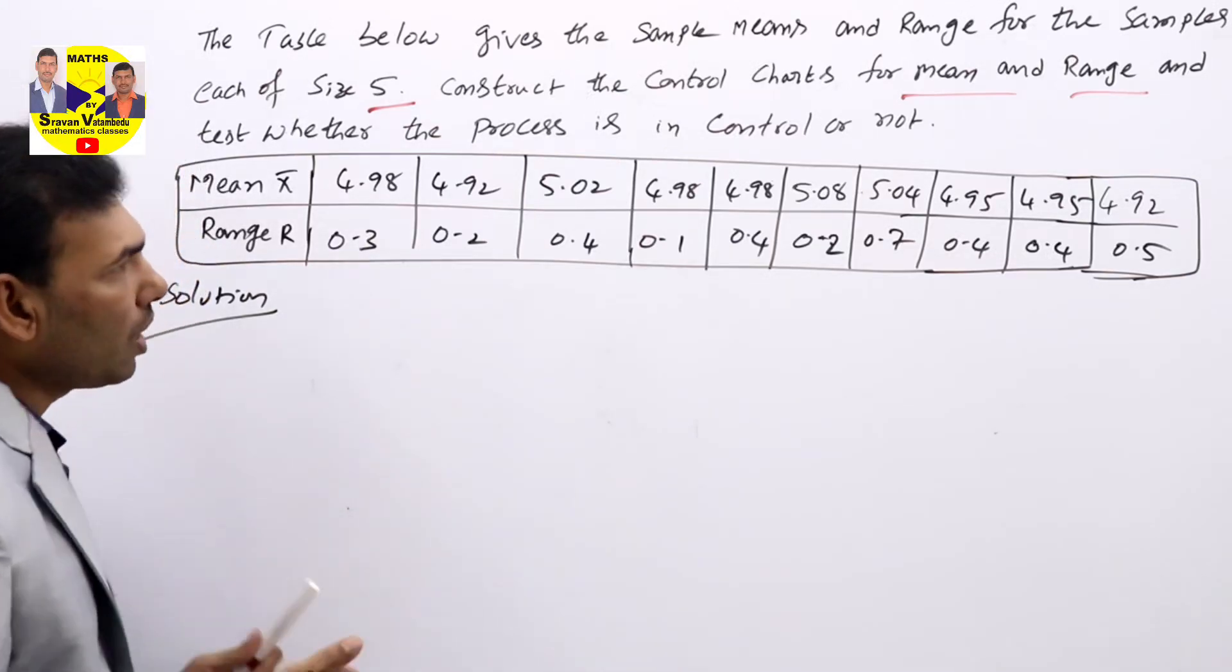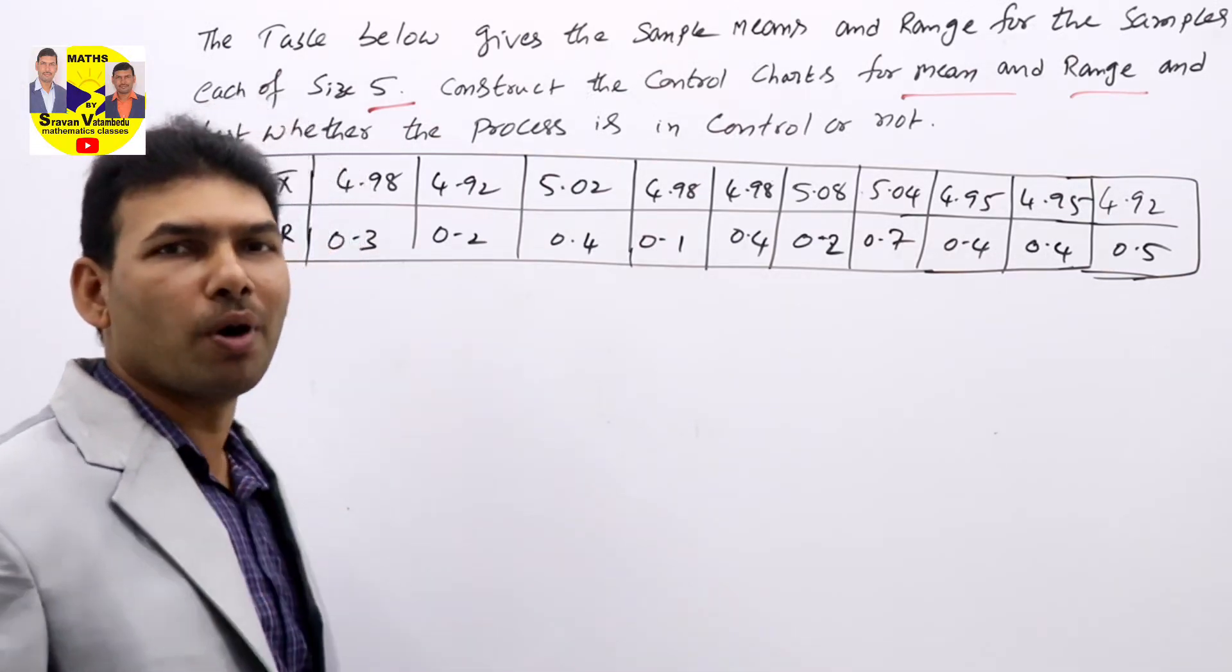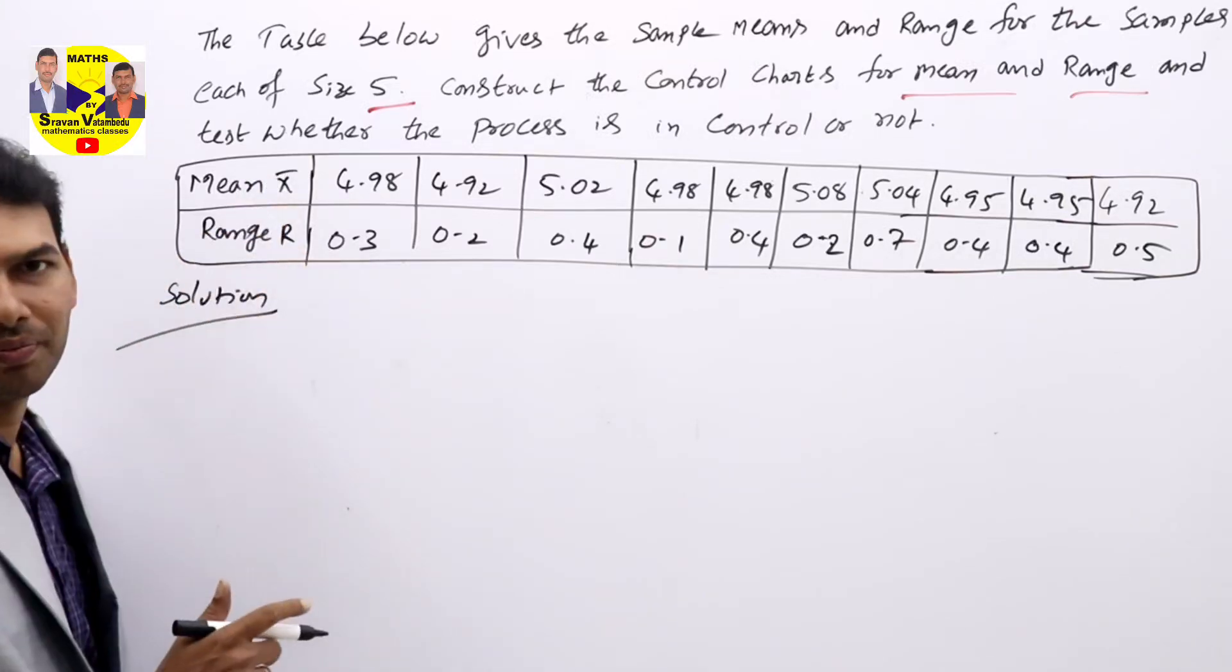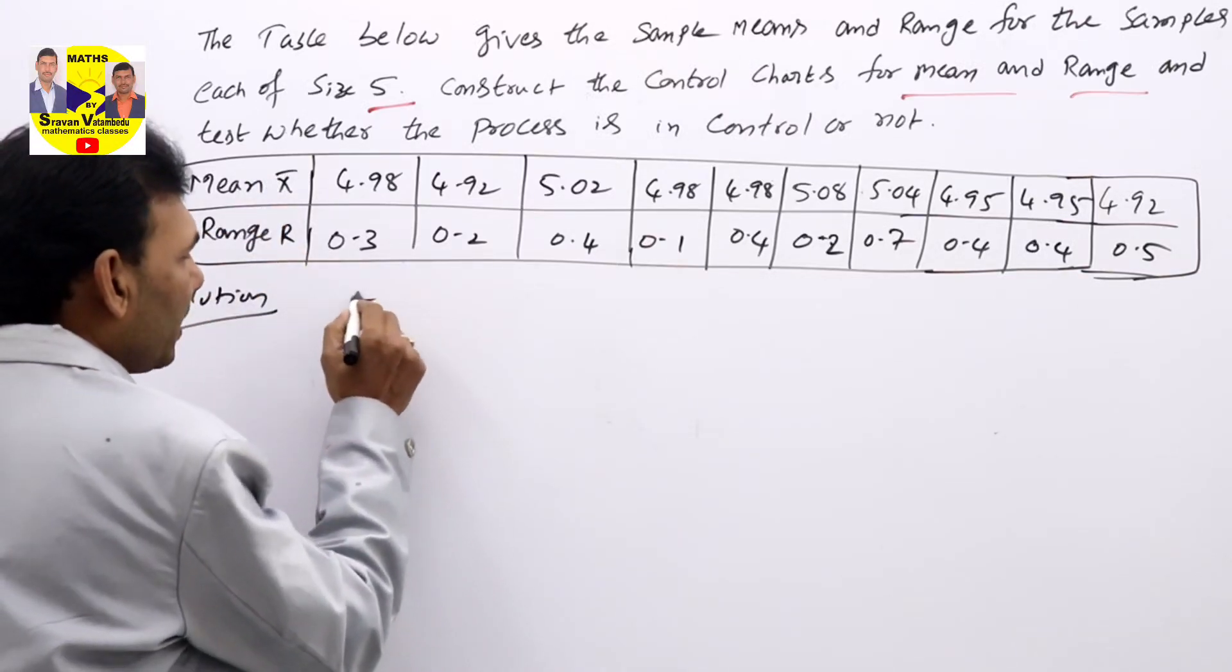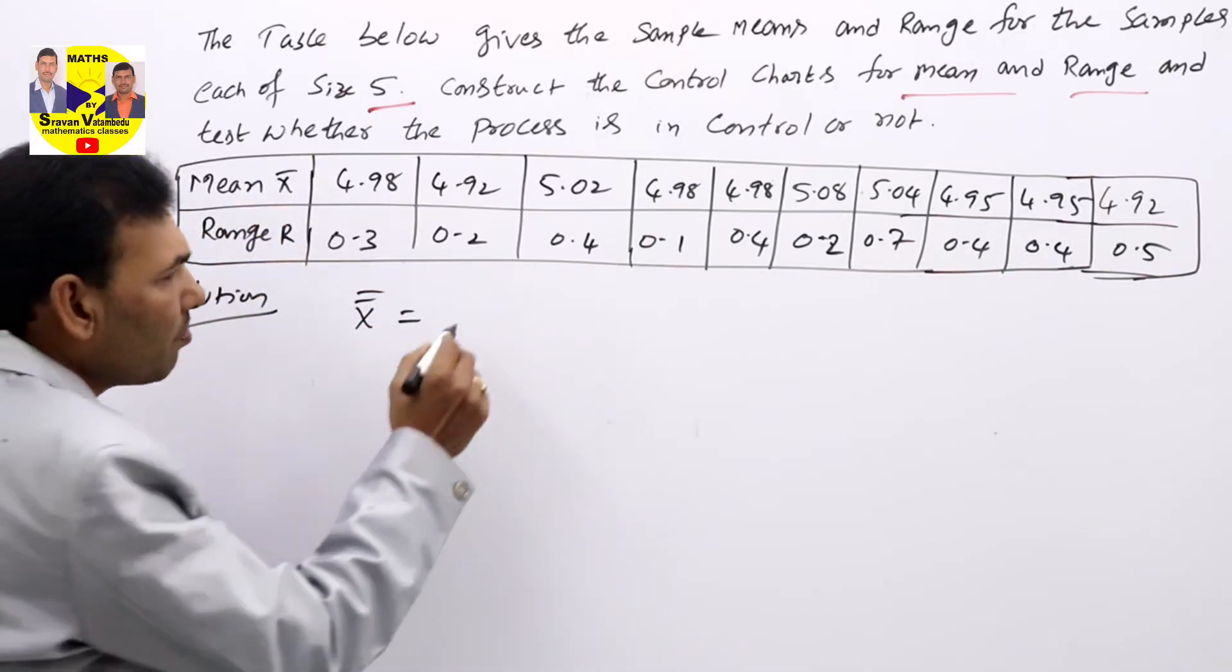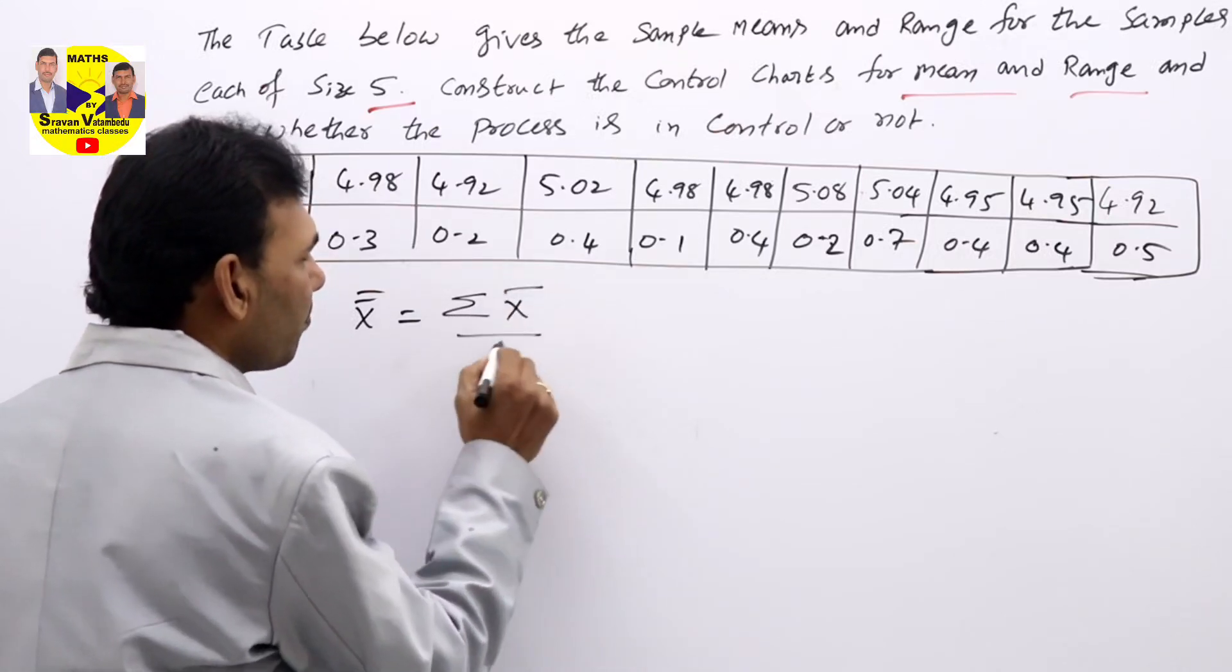We all know that to draw a mean chart, X double bar is needed. X bar is given. X double bar means sum of means by number.